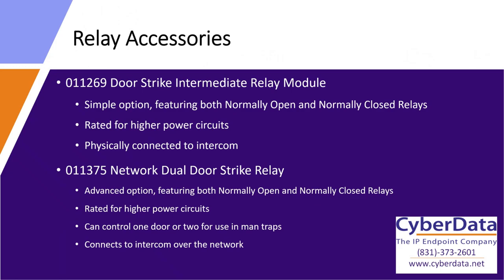For the two relay accessories: the first is the 011269, our door strike intermediate relay module — your simple, bare-bones option. It's got both normally open and normally closed style relays and it's good for dealing with higher power circuits, whether higher voltage or higher amperage. If you're running something through your intercom but it's above the one amp at 30 volt DC that our onboard relay supports, you need something like this. Or if you're dealing with a normally closed style circuit, like a magnetic lock. One potential downside is it's physically connected to the intercom: when the intercom closes its relay, it completes the circuit, which then tells the connected door strike intermediate relay module to either close its normally open circuit or open its normally closed circuit.